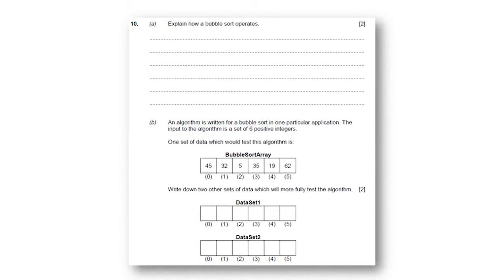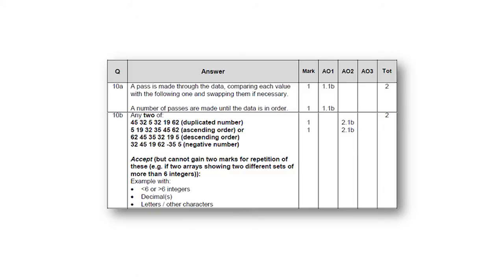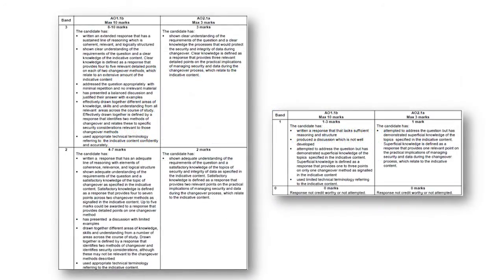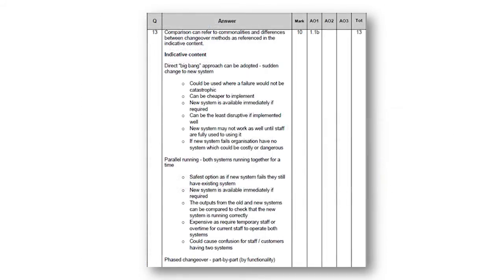Question 10 requires demonstration of understanding and application of understanding, and indicates the straightforward nature of questions in this component. As with the A-Level, mark schemes are laid out clearly, with marks allocated to answers and assessment objectives unambiguously. Extended responses are also required, as indicated by question 10, which assesses two assessment objectives. These questions, as with the A-Level, are marked in mark grids, with bands clearly describing the qualities required in an answer at each mark band. These mark bands again mesh with clear indicative content, providing a high degree of guidance to examiners and good marking accuracy.